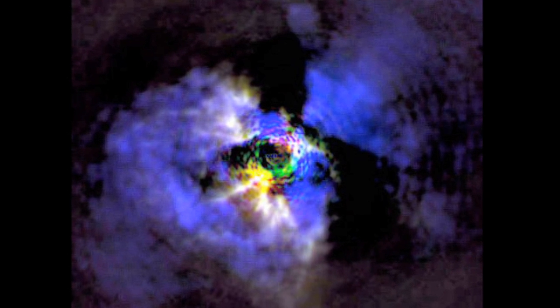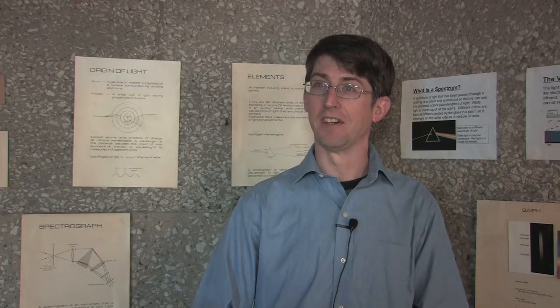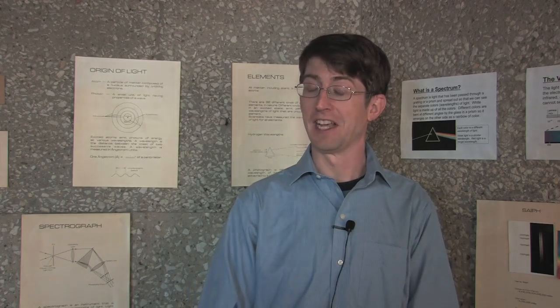By looking at which colors are brighter and which are darker, we can figure out what the star is made of, how fast it's moving towards us or away from us, what the conditions are in the atmosphere on the star, and all kinds of other information.